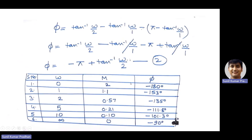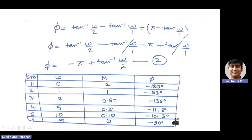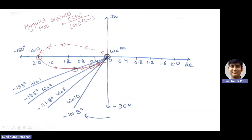We vary omega from 0 to infinity, taking values like 0, 1, 2, 5, 10, and infinity — so 6 points. For each value of omega, find the magnitude and phase. When ω = 0: magnitude is 2, phase is −π. When ω = 1: magnitude is 1.1. After computing all values and plotting the coordinates, we get the polar plot — starting from ω = 0 to ω = infinity.